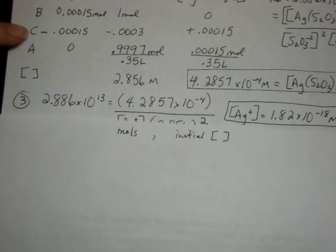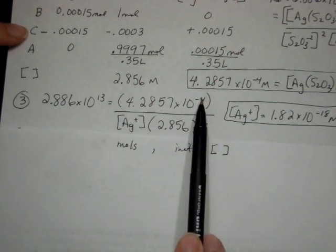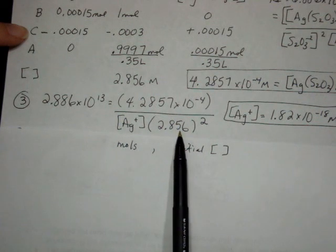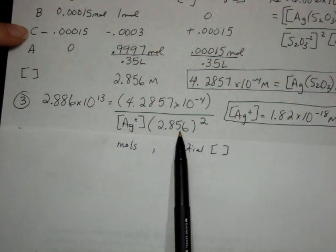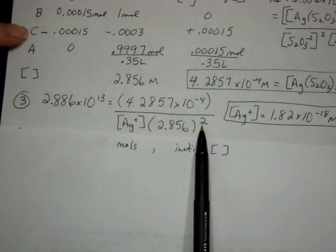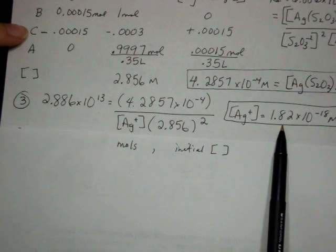Okay, you're back. I plugged it in, new K value. There's the complex. There's the unknown silver. There's the thiocyanate, excuse me, not thiocyanate, but thiosulfate. There we go. Squared. Don't forget to do that. Here's my Ag plus concentration. So basically zero.